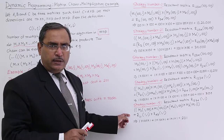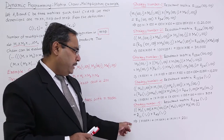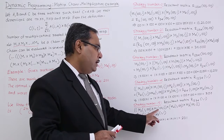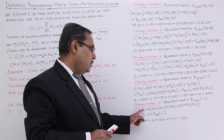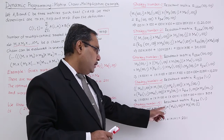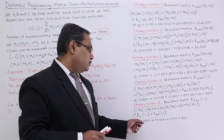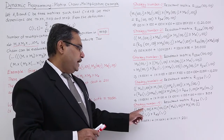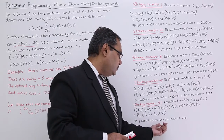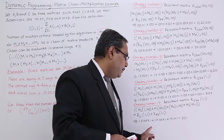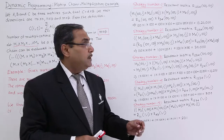Strategy number 5 (least complexity): we multiply M2 and M1 simultaneously with M4 and M3. R21 is 1×1 and R43 is 1×1. Complexities: 1×100×1 = 100, 1×100×1 = 100, and the final multiplication 1×1×1 = 1. Total: 201 multiplications — this is the optimal/least cost.